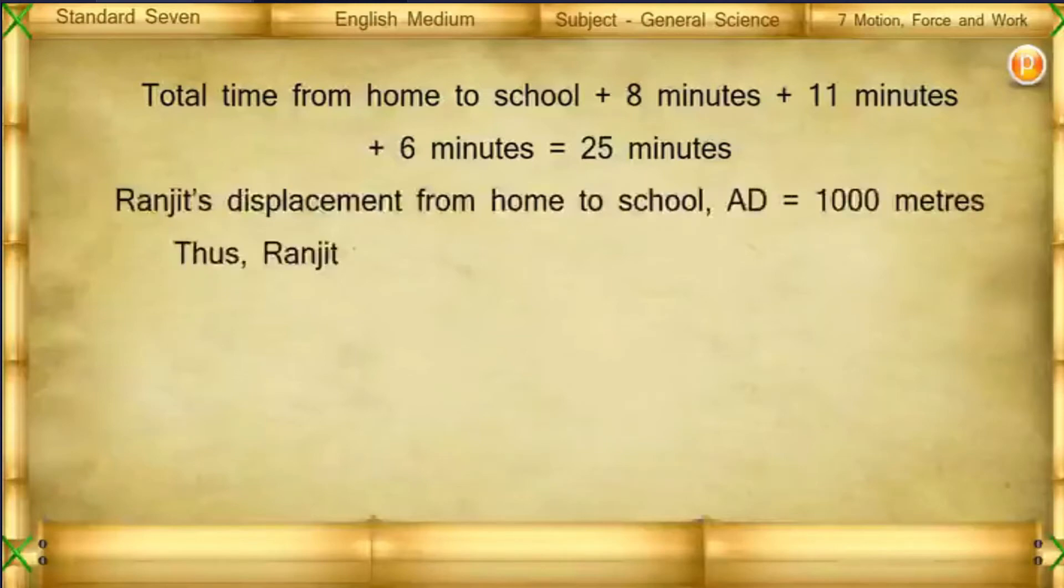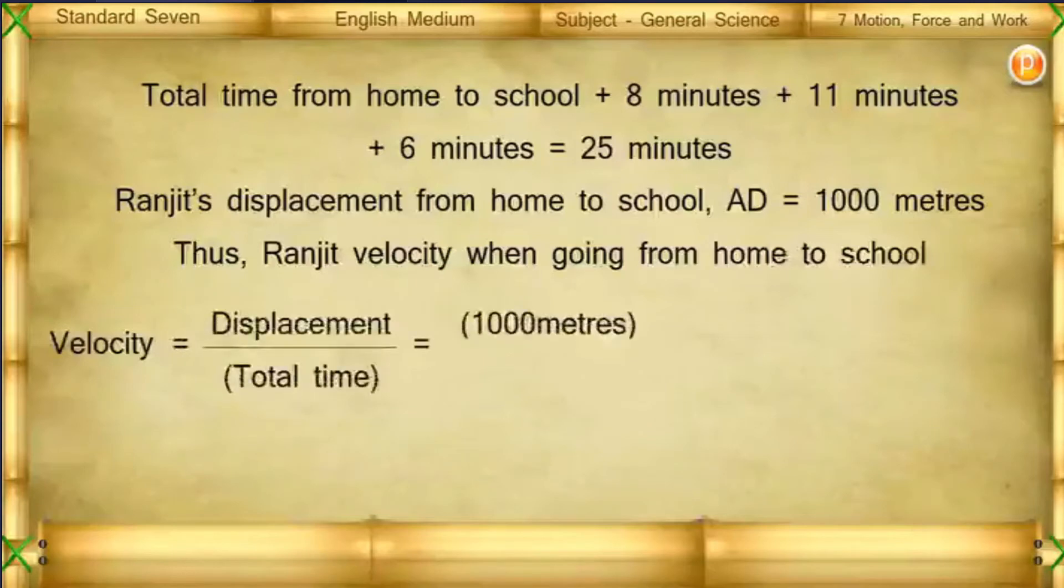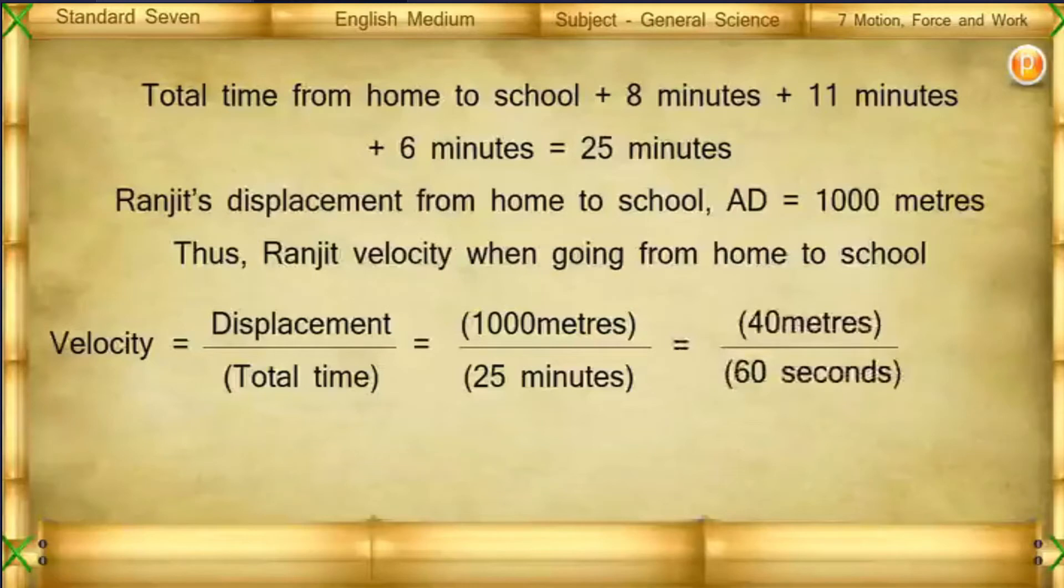Thus Ranjit's velocity when going from home to school: velocity equals displacement upon total time, that is equal to 1000 meters upon 25 minutes equals 40 meters upon 60 seconds. The answer is 0.66 meters per second.